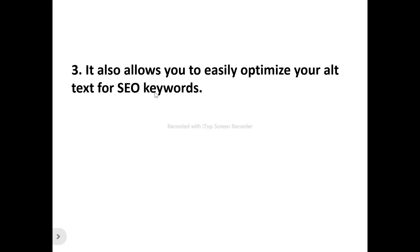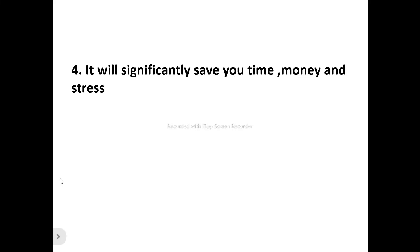Number three, it allows you to optimize your alt text for SEO keywords. You can easily take control of your website SEO by optimizing your alt text with Alt Text AI. You just specify the keywords you want included, and they are seamlessly incorporated in a natural-sounding manner. By including relevant keywords in your alt text, you can improve your site's search engine ranking without attracting any SEO penalty. It also plays well with popular WordPress SEO plugins such as All-in-One SEO and Yoast.